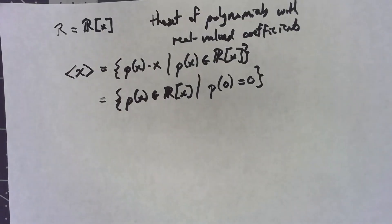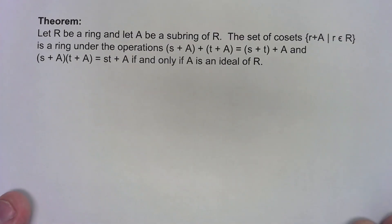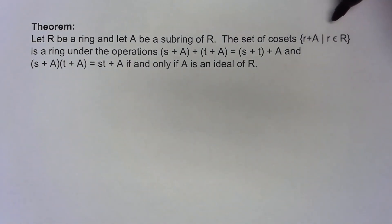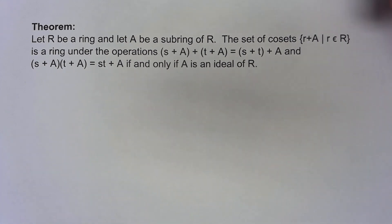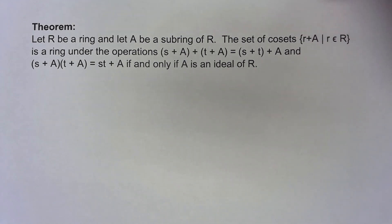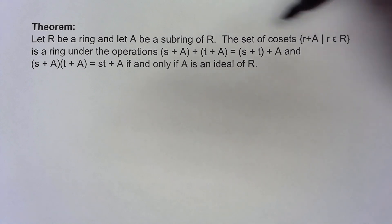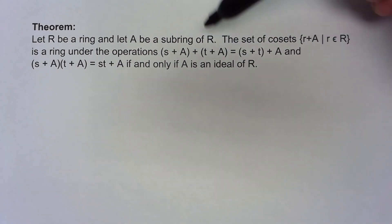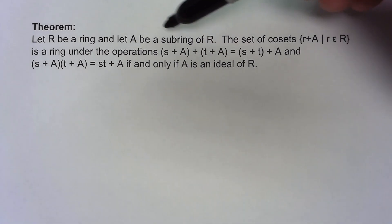So what is the point of having an ideal? The point is basically the same as the point of having a normal subgroup: if we have an ideal we can create a factor ring. If we've got a ring and a subring we create cosets the same way we did for factor groups, but because it's a ring we have two operations — addition and multiplication — and in both cases we define them the same way. The key point is that this is well defined, and it's a ring under those operations exactly when the subring is an ideal.